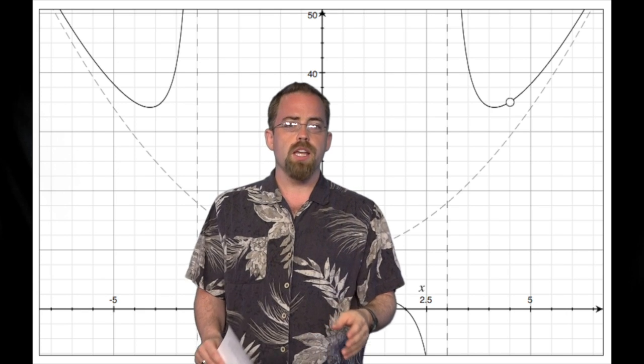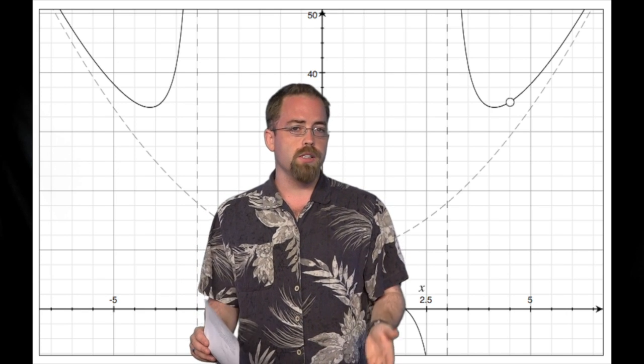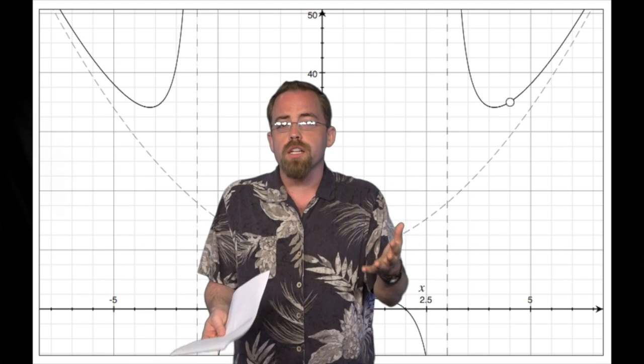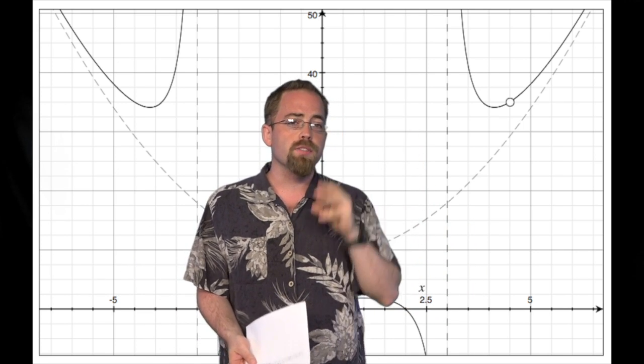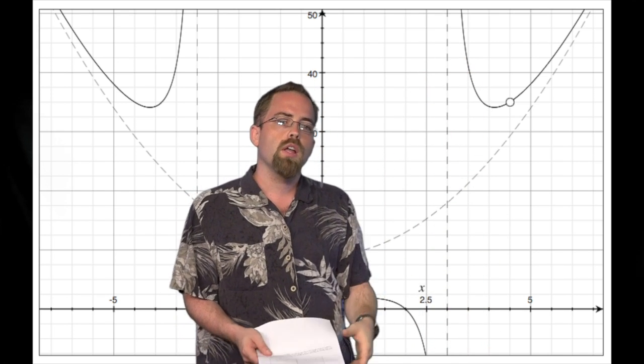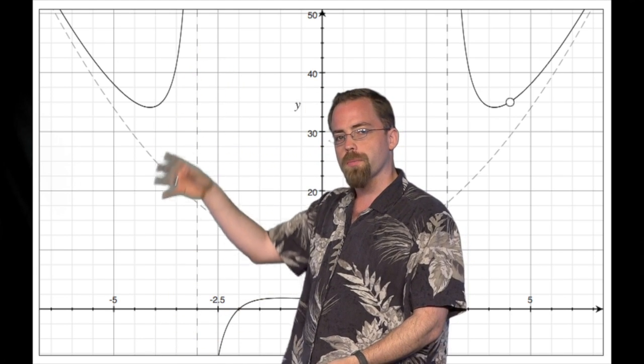The denominator factors into (x minus 3)(x plus 3), and the x minus 3 makes this asymptote at positive 3. Because if you try to plug in 3, you're going to be dividing by 0, which graphically we can represent as an asymptote. Then over here, this is where the asymptote from the x plus 3 comes from.